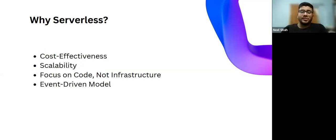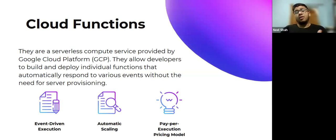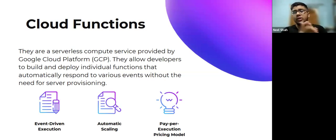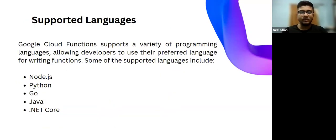Cloud Functions is a service provided by GCP — Google Cloud Platform — that lets you deploy serverless functions to respond to various events without manual intervention. AWS has Lambda, Azure has Azure Functions — all major cloud providers offer this. Once you understand the basic functionality, you can use any of them. Cloud Functions is language-agnostic, supporting Node.js, Python, Go, Java, and .NET, covering the major languages.